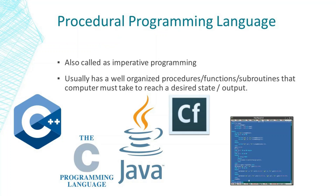Procedural programming language, also called imperative programming, usually has a well-organized procedure, function, or subroutine that the computer must take to reach a desired state or output. Examples of procedural programming languages are C++, C, Java, Adobe ColdFusion, and Pascal.